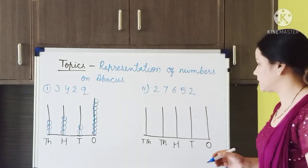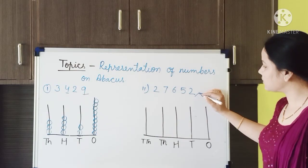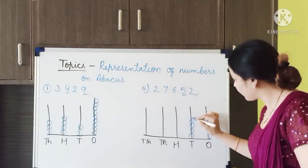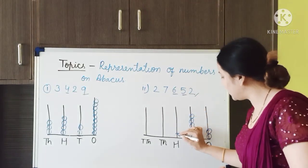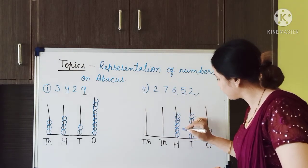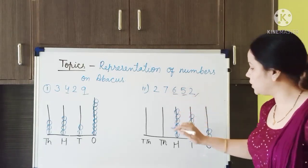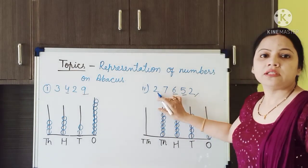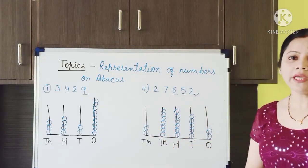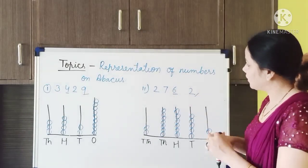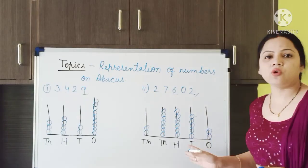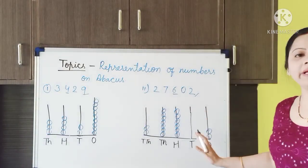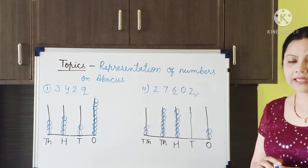Now I will represent the 5 digit number 27652 on the abacus. The 1s position gets 2 beads, the 10s position gets 5 beads, the 100s position gets 6 beads, the 1000s position gets 7 beads, and the 10,000s position gets 2 beads. If a digit is 0, we don't make any bead on that spike — that spike will remain empty.